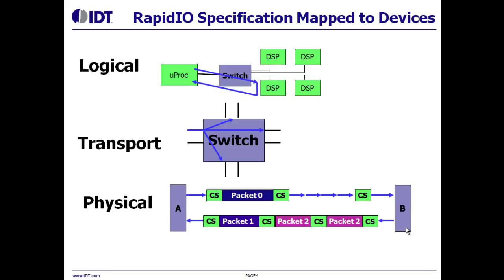The transport layer maps largely to RapidIO switch devices. The physical layer specification applies to every RapidIO link. At either end of the link are two link partners or processing elements. These link partners exchange two kinds of information: packets and control symbols. The use of control symbols allows RapidIO to guarantee the in-order delivery of packets from an endpoint to their ultimate destination. RapidIO control symbols have a unique capability among interconnects in that they can be embedded within packets. This gives RapidIO the lowest latency control path for flow control and error recovery of any interconnect.